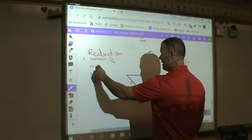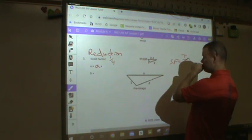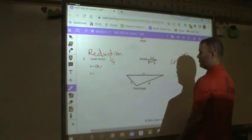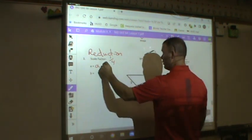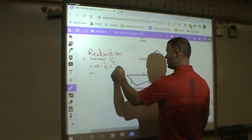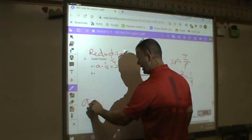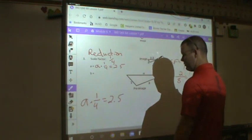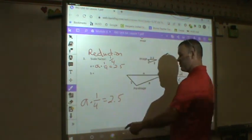Right? Because I'm taking this value, I've got to multiply it by my scale factor, 1 fourth, to get 2.5. Okay, so how do I figure that out? Well, let's look down here. A times 1 fourth equals 2.5. What number times a quarter is 2.5? It's an algebra problem. It's a one-step algebra problem. How do I solve it?